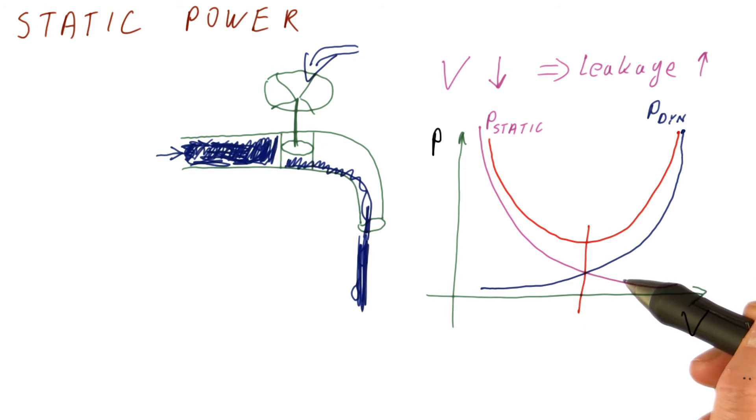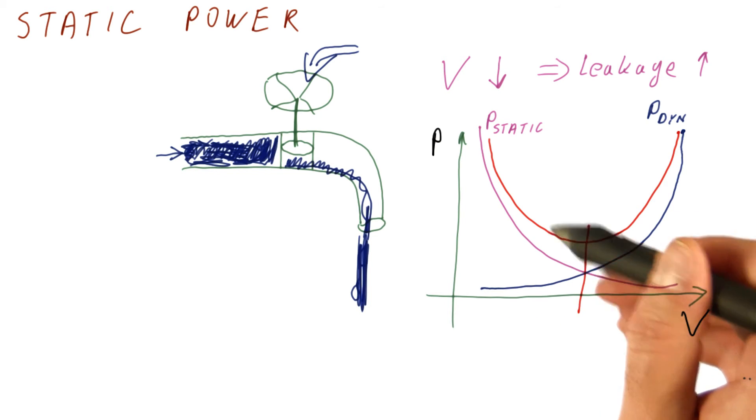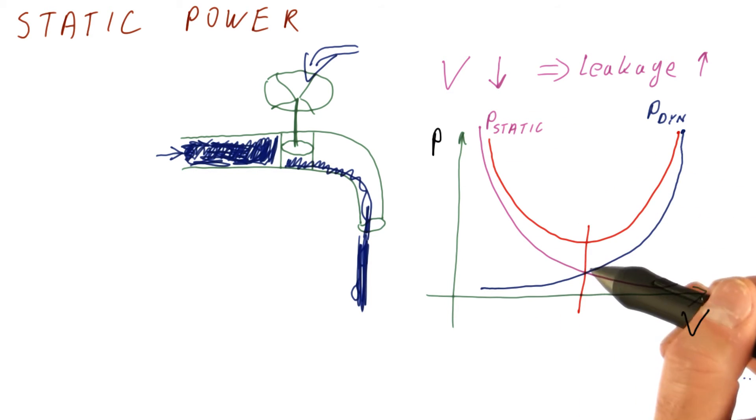So this is why modern processors cannot just arbitrarily lower the voltage to decrease the dynamic power, and also why they're starting to have problems with static power because we have already lowered voltage to the point where the static power becomes an issue.